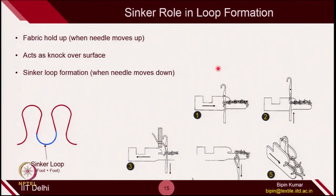In summary, the sinker in the knitting process helps in fabric holding — once the needle moves up, it holds the fabric, especially the sinker part of the loop, to not allow the fabric to raise along with the needle. It also acts as a knockover surface, because during the downward movements once the loop is released it is supported by the belly part. It also helps to form the sinker loop. The sinker loop of a particular knitting loop is named because of the sinker element of circular knitting machines, which helps in sinker loop formation.